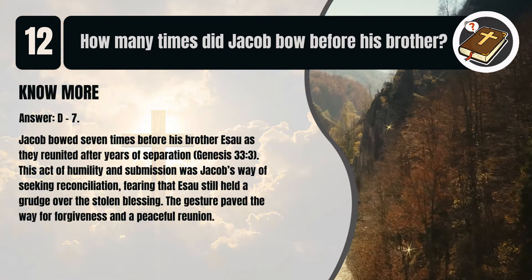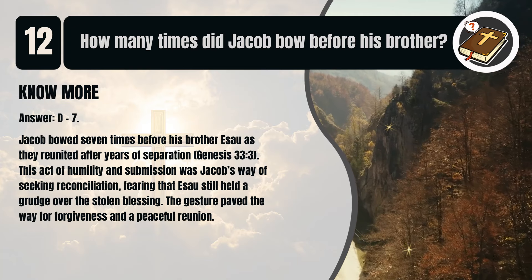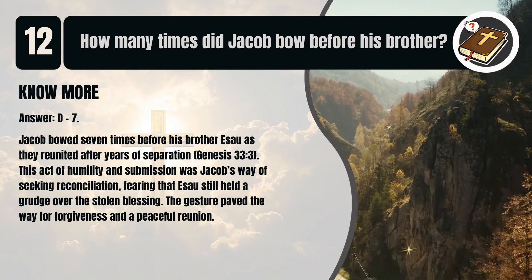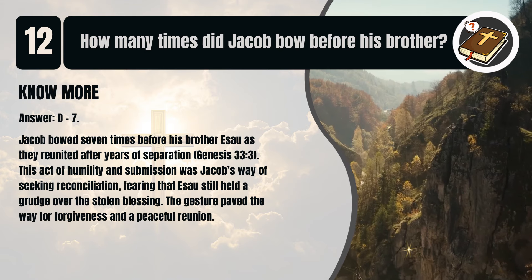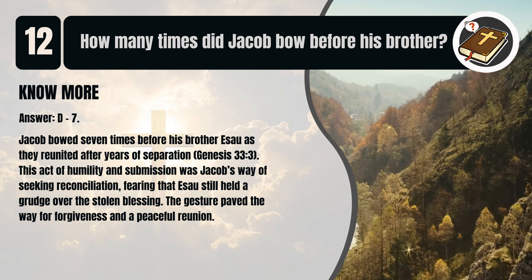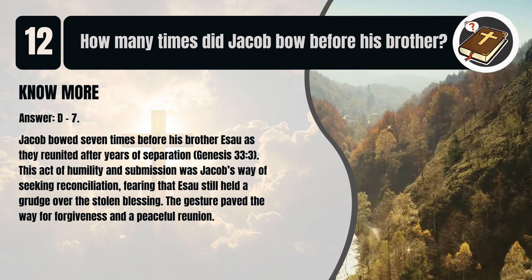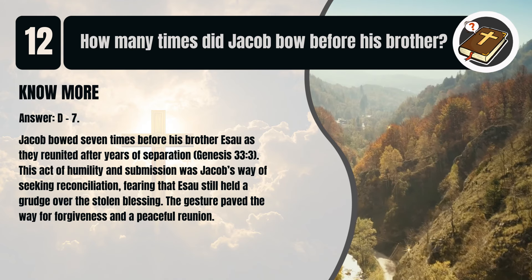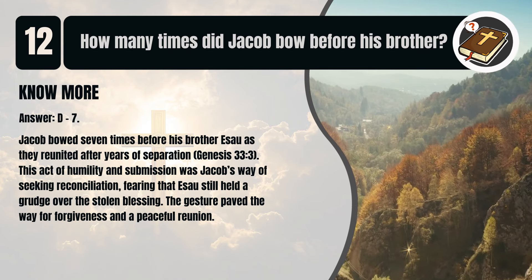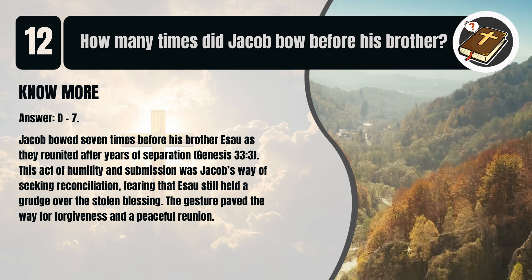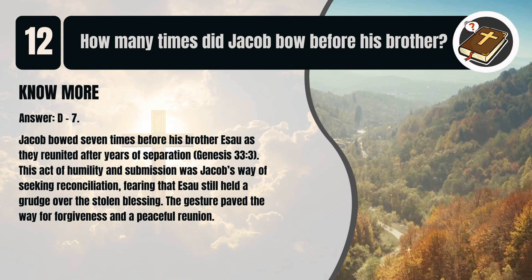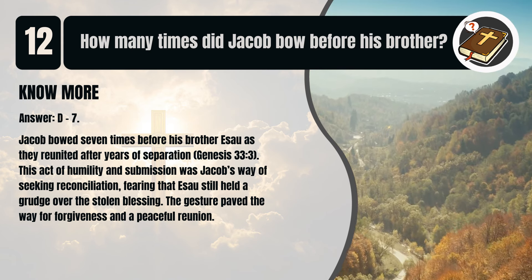That's D. Seven. Jacob bowed seven times before his brother Esau as they reunited after years of separation. Genesis chapter 33 verse 3. This act of humility and submission was Jacob's way of seeking reconciliation, fearing that Esau still held a grudge over the stolen blessing. The gesture paved the way for forgiveness and a peaceful reunion.